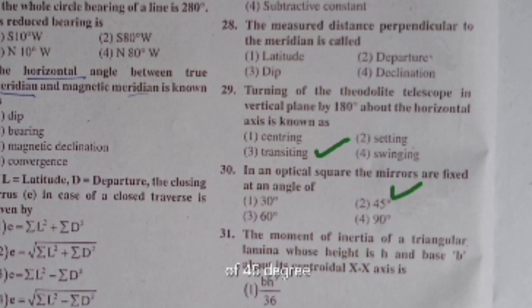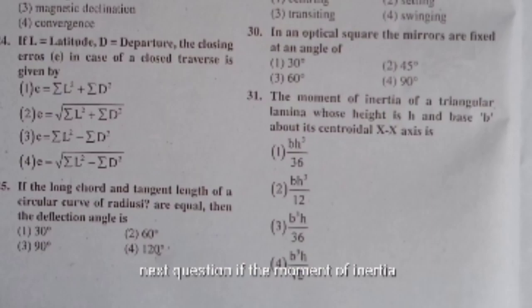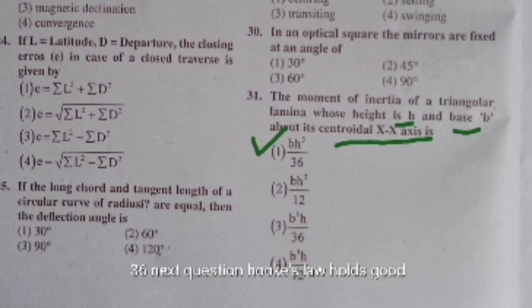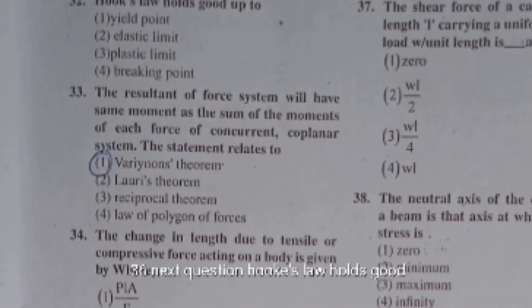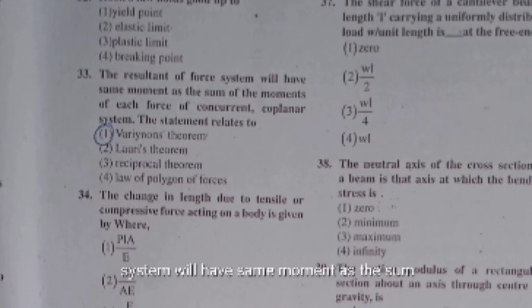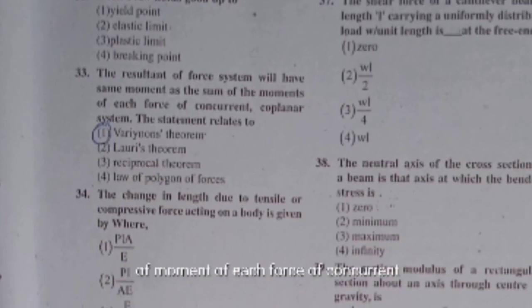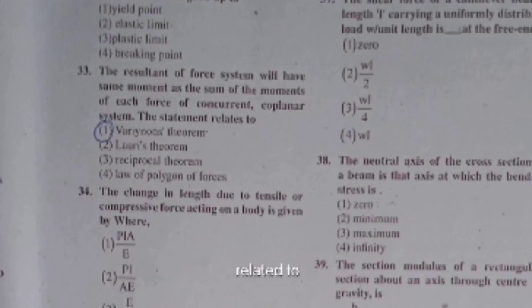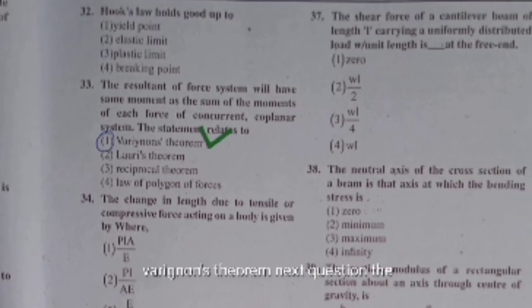The moment of inertia of a triangular lamina of height h and base b about its centroidal axis is bh³/36. Hooke's law holds good up to the elastic limit. The resultant of a force system will have the same moment as the sum of moments of each force in a concurrent coplanar system; this is related to Varignon's theorem.